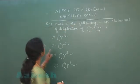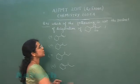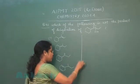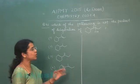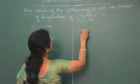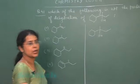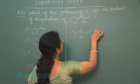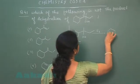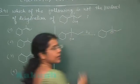Question number 41: Which of the following is not a product of dehydration of the given alcohol? Four options with structures of unsaturated compounds are given. To find the correct answer, we apply the reaction mechanism. The given alcohol is a tertiary alcohol. The first step of the mechanism is the formation of a tertiary carbocation.